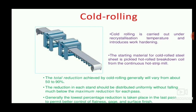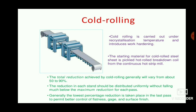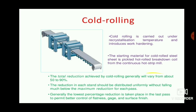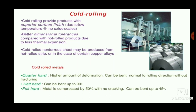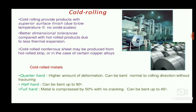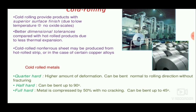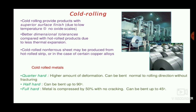Cold rolling is carried out below the recrystallization temperature and introduces work hardening. The starting material is bloom or slab and the final product is sheet. The total reduction achieved by cold rolling generally varies from 15 to 90 percent, and the reduction at each stand should be distributed uniformly. Cold rolling provides a superior surface finish and better dimensional tolerances. Cold rolled metals can be categorized into three types: quarter hard, which can be bent normal to rolling direction without fracturing; half hard, which can be bent up to 90 degrees; and full hard, which is compressed by 50 percent with no cracking and can be bent up to 45 degrees.